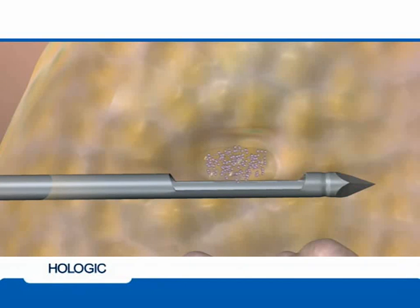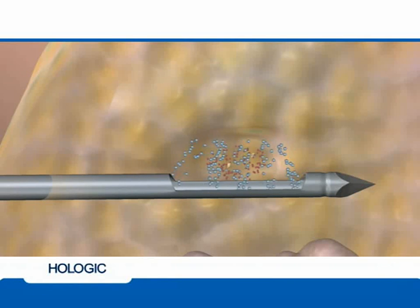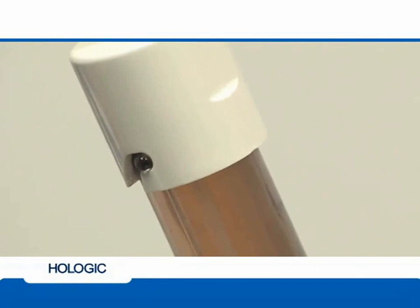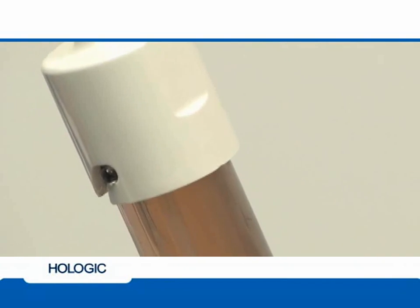Lavage mode delivers saline to the biopsy site and aspirates the biopsy cavity, allowing loose tissue and other fluids to be cleansed from the site while preparing the site for marker placement. Lavage the cavity 360 degrees until the fluid in the collection chamber turns from red to light pink, indicating the cavity is clear.